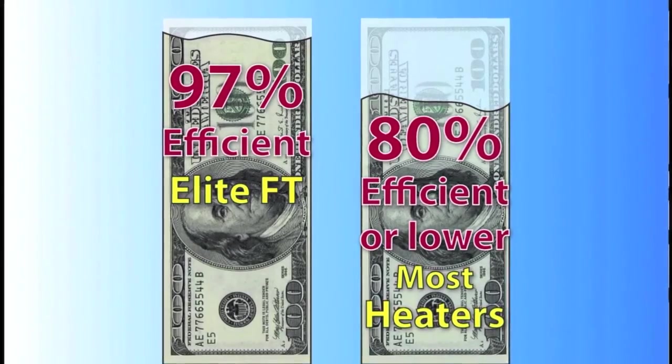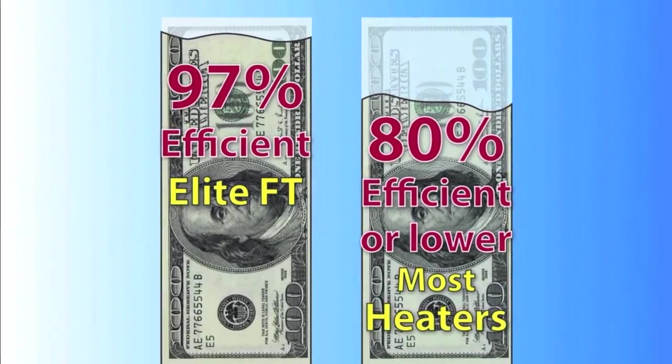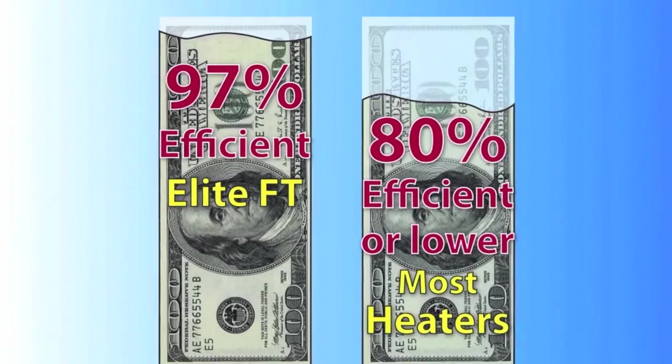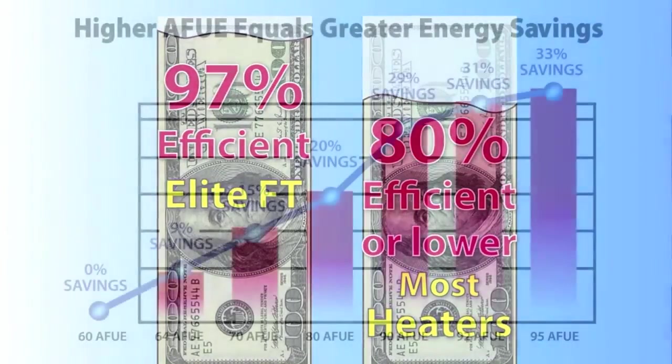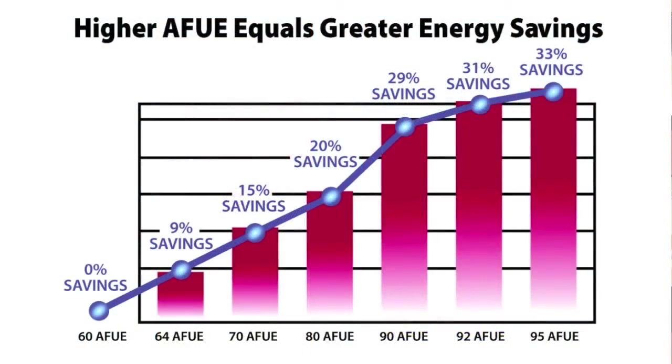Compare this to most space heating appliances installed in homes today, which are generally in the 80% range or lower, and you can realize outstanding savings over conventional boiler installations.